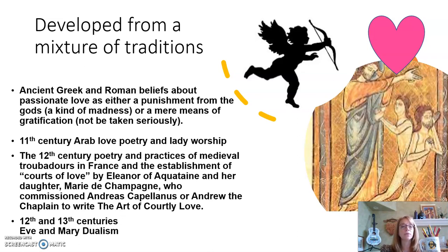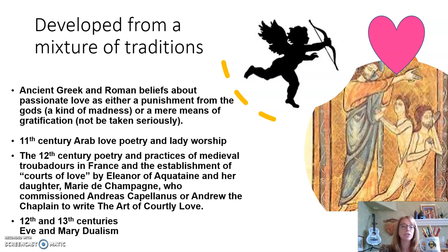In the 11th century there was Arab love poetry and lady worship. In the 12th century, the practices of medieval troubadours who went around singing about love, and also the establishment of courts of love by Eleanor of Aquitaine and her daughter Marie de Champagne, who commissioned a guy named Andreas Capellanus, or Andrew the Chaplain, to write a handbook with the rules. And it was called The Art of Courtly Love.